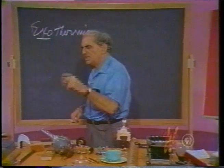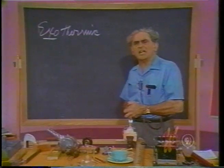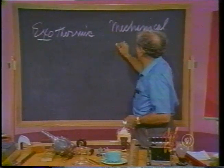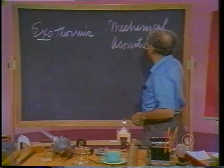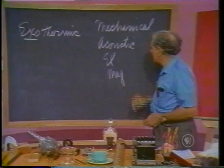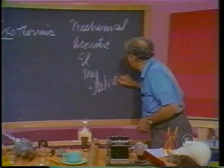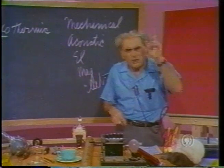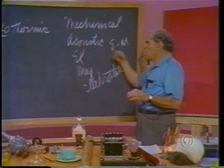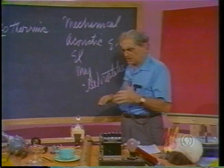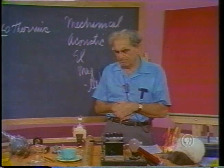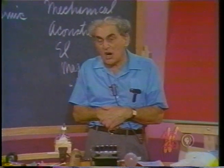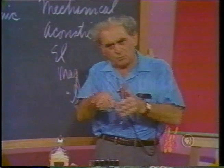There are various kinds of energy: mechanical energy, acoustic energy, electric energy, magnetic energy, electrostatic energy, nuclear energy, electromagnetic energy. All of these kinds of energies can produce heat energy. And so we say that thermal energy, or heat energy, is a degenerate form, because all the other forms can convert to that one.